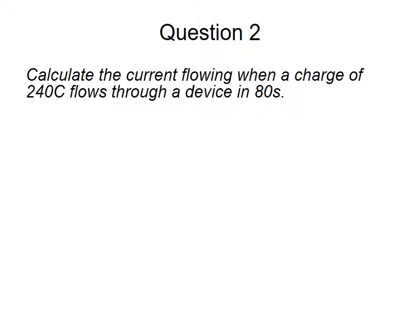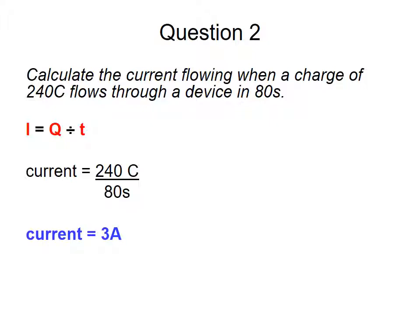Question two: calculate the current when a charge of 240 coulombs flows through a device in 80 seconds. Pause the video. Using current equals charge divided by time: 240 divided by 80 gives 3 amps.